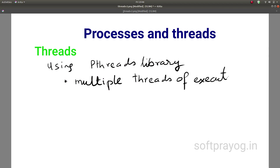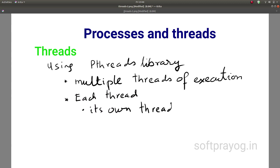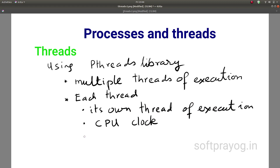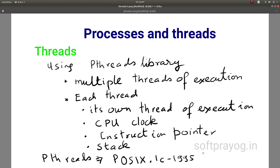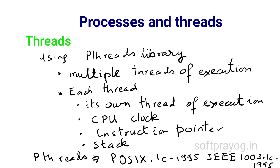With threads, using a library like pthreads, we can have multiple threads of execution. Each thread has its own flow of control — that is, each thread has its own CPU clock, instruction pointer, and stack. Basically, a thread executes a function of the program. All threads share global data. POSIX threads, usually called pthreads, is an API defined by the standard POSIX.1c 1995, published by IEEE as thread extensions IEEE standard 1003.1c 1995.